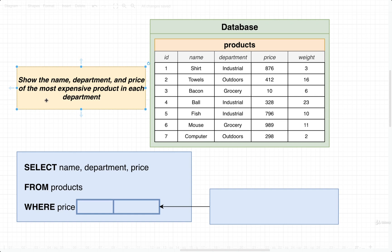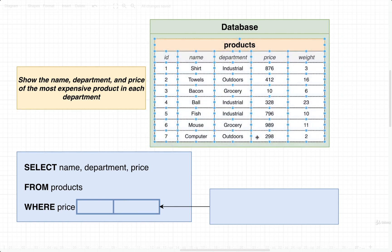When you first look at this problem, it's going to sound rather easy to solve. But the more you look at it, the more you realize that it is a little bit challenging. So our goal is to show the name, department, and price of the most expensive product in each department. That is the goal. Let's first walk through this imaginary dataset and make sure that we really understand what we're trying to do.